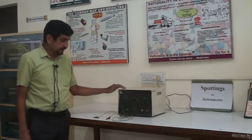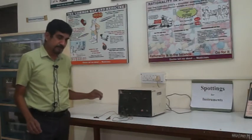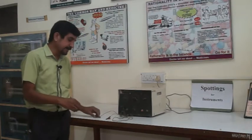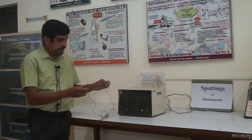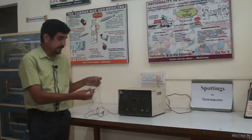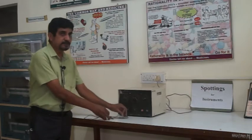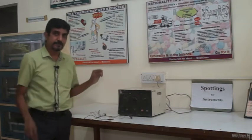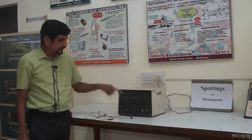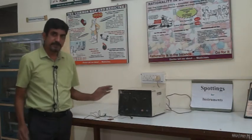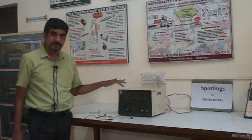This is a convulsivometer. It produces convulsions in rats or mice. These are the electrodes. These electrodes are attached to the external ear of the rat or mice, and when we switch on this instrument, it produces convulsions.